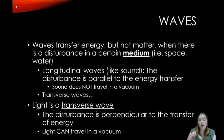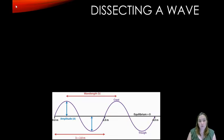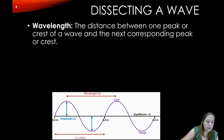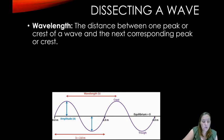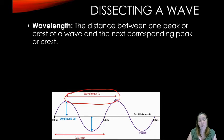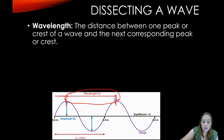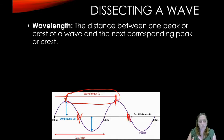Light can travel in a vacuum; it does not need matter to travel, whereas sound does. Looking at the parts of a wave, the wavelength is the distance between one peak or crest of a wave and the next corresponding peak. In the diagram, going from zero to two is the wavelength — so here the wavelength is a two-meter wave.